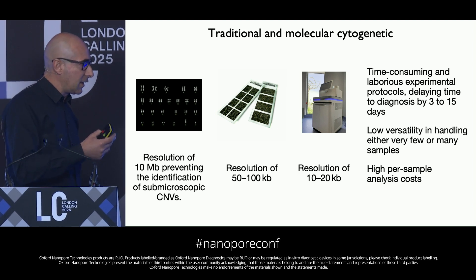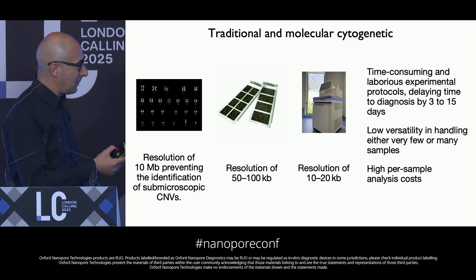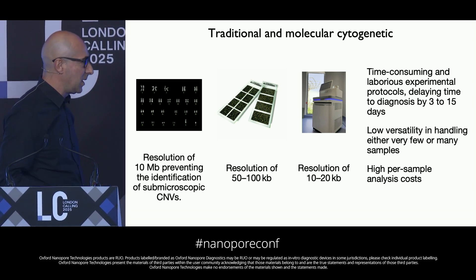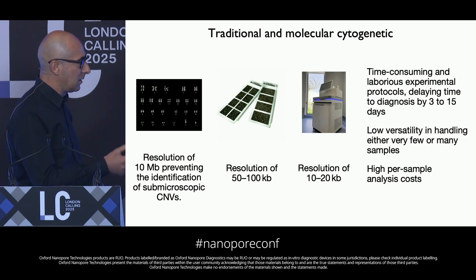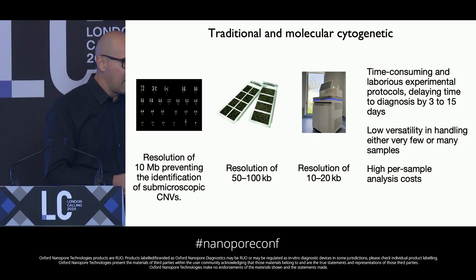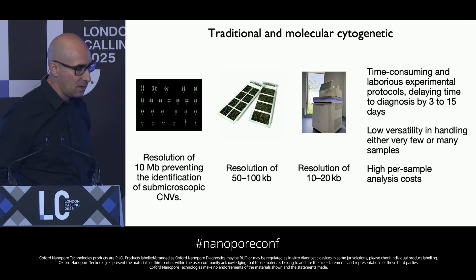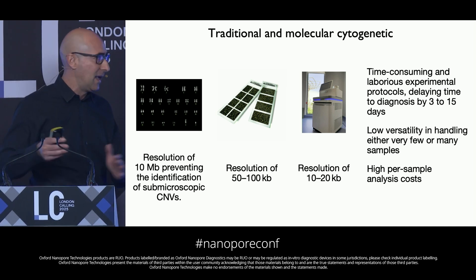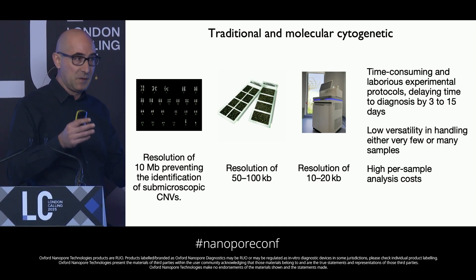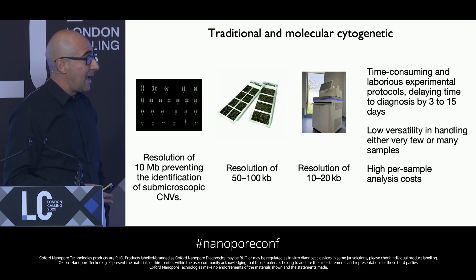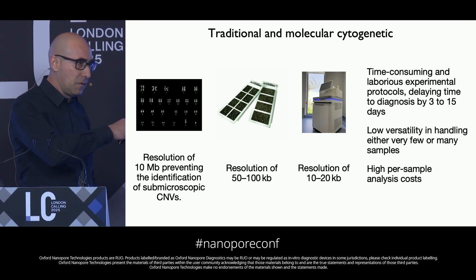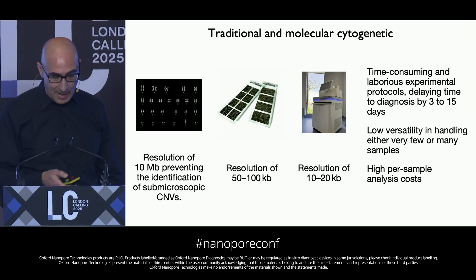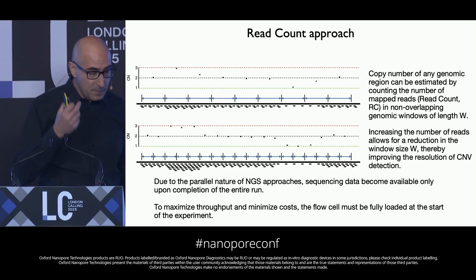Molecular karyotyping with CGH array microarray and NGS have a resolution limit in the order of 50 or hundreds of kilobase pairs, and with NGS around 10–20 kilobase pairs. However, all three approaches have very time-consuming and complex experimental protocols that delay time to diagnosis by 3 to 15 days, with lower versatility in handling either few or many samples, and high per-sample analysis costs.